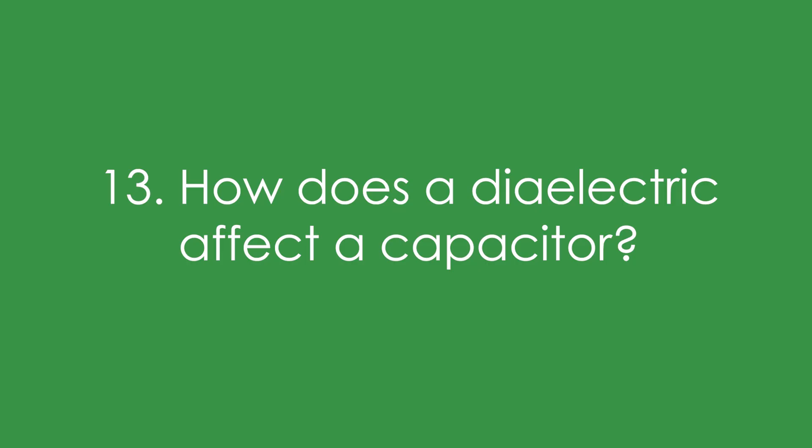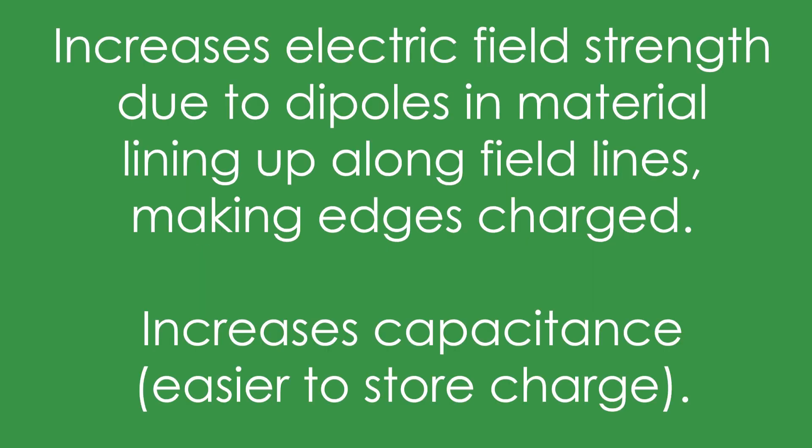Thirteen, how does a dielectric affect a capacitor? It increases the electric field strength due to the dipoles in the material lining up along the field lines, making the edges charged. And this increases capacitance. That means it's easier to store charge.